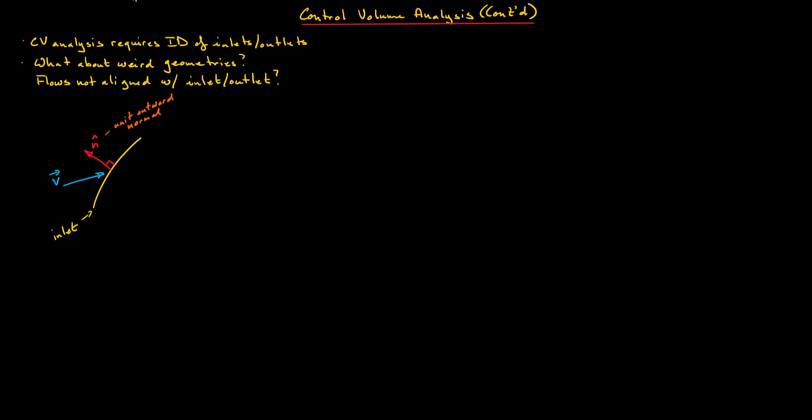How do we deal with something like this? What we can do is consider the dot product of the local velocity vector and the unit outward normal vector. Recall that the dot product V dotted with n gives us a scalar result.